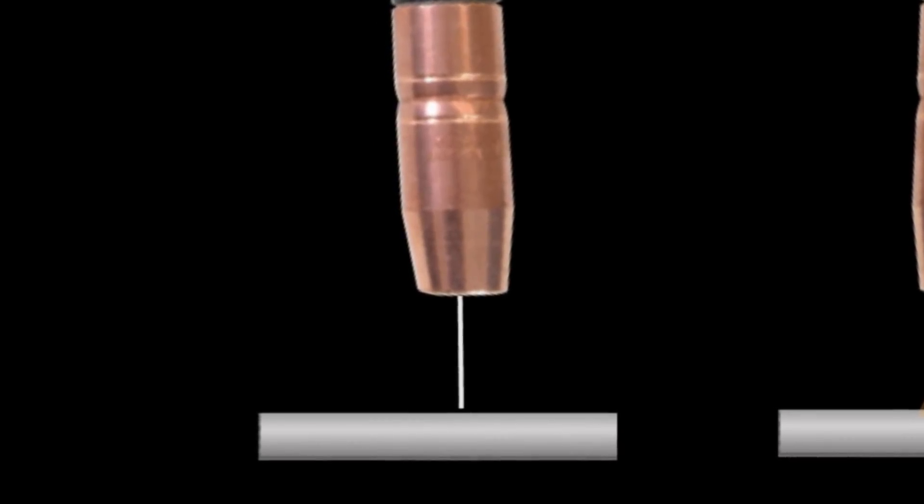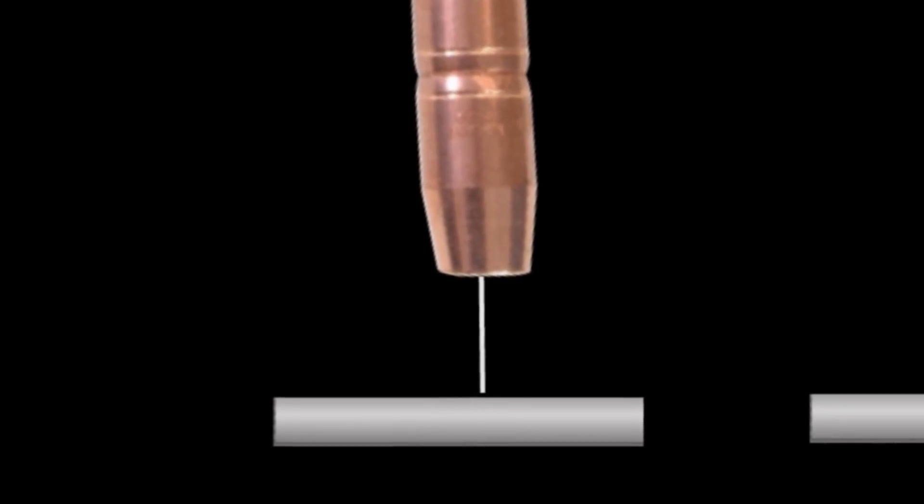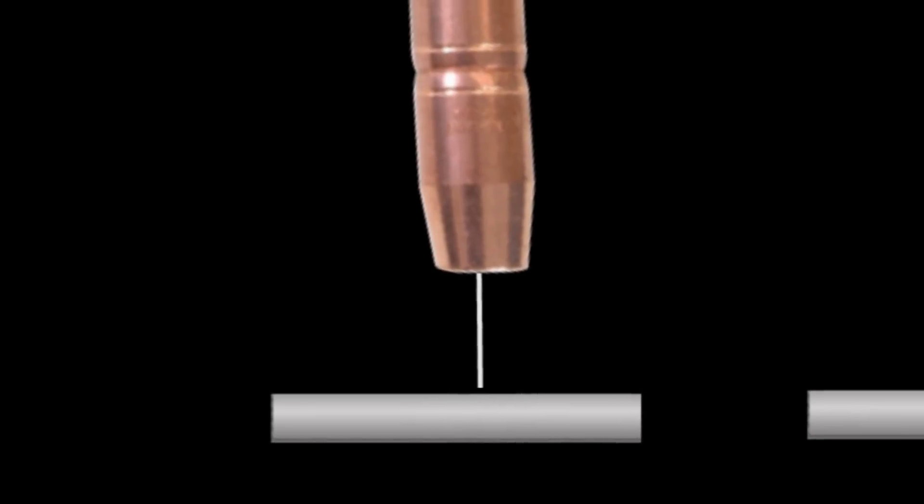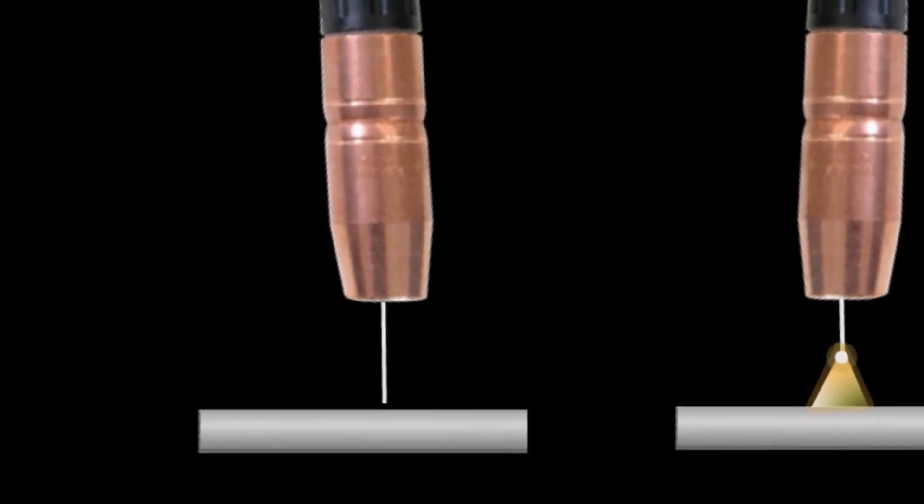Now in short circuit MIG, what happens is the wire comes out, makes contact with the work, burns it back a little bit, and the wire keeps on spitting out over and over again. So very rapidly, it literally burns back deposits, burns back deposits, burns back deposits. It has to actually make contact with the actual base metal in the work itself for it to deposit metal.